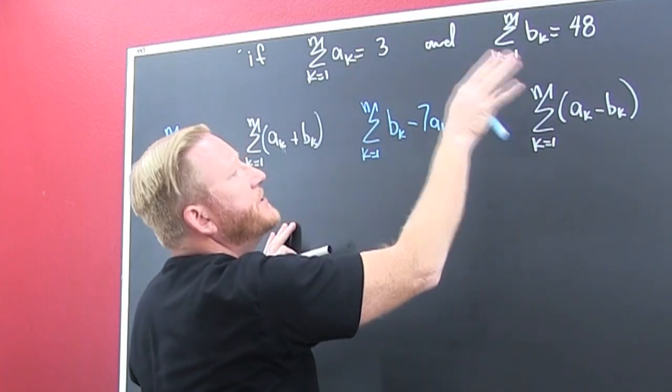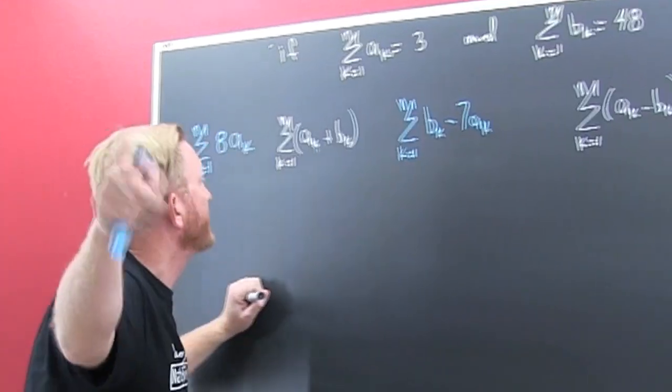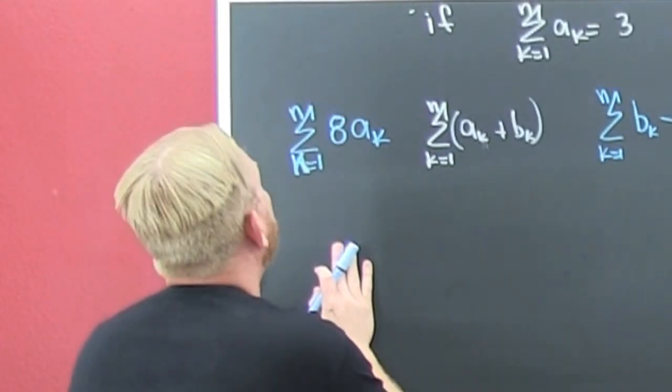Now, BK and AK are two different sequences, so when I add those sequences, they're two different sums. So here we go.